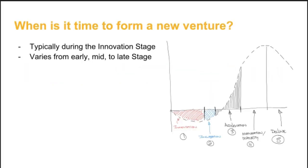Let's look at where in the business lifecycle you might form your new venture. Venture formation usually takes place sometime in the innovation stage, but it can vary from the beginning, middle, or end. Remember in step 0 when we talked about starting with an idea, a technology, or a passion? That idea, technology, or passion often evolves into a project before it is fully formed as a separate corporate entity. In some cases, this project may go through the entire innovation stage prior to formation.